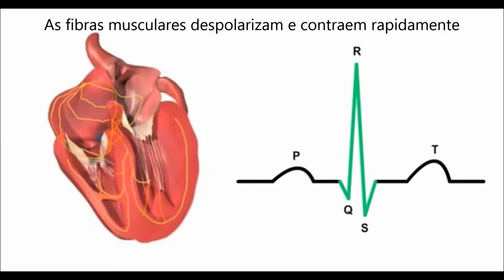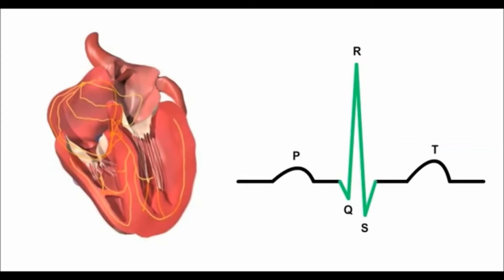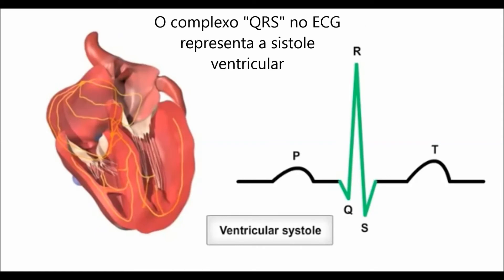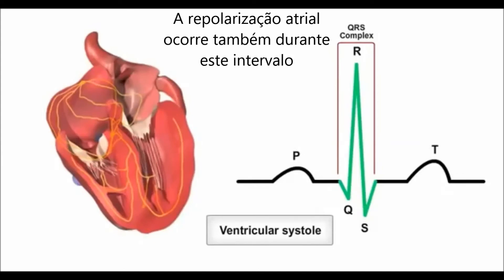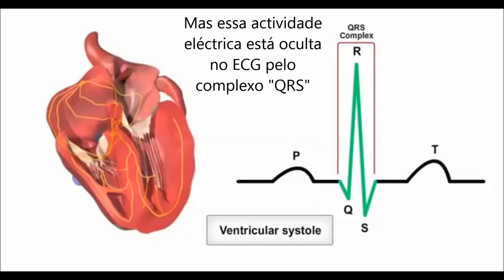As the signal spreads through the ventricles, the contractile fibers depolarize and contract very rapidly, inducing ventricular systole. The ECG's QRS complex represents this rapid ventricular depolarization. Atrial repolarization also occurs at this time, but any atrial activity is hidden on the ECG by the QRS complex.